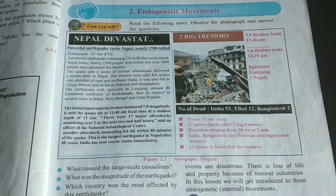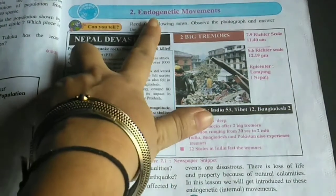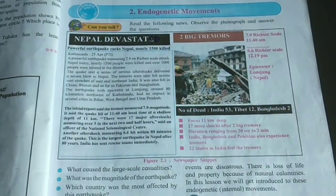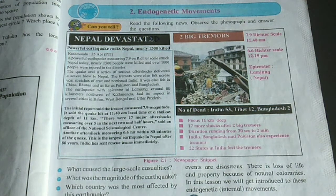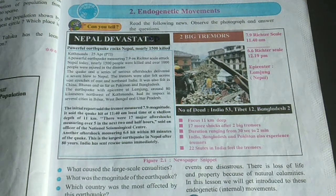Now we are going to start with the lesson — Lesson Number 2: Endogenetic Movement. The endogenic process is a geological process. It occurs under the earth's surface. Many people are not aware of the fact that the earth is always moving because they do not feel it. The movement the earth goes through is caused by the interior of the earth.